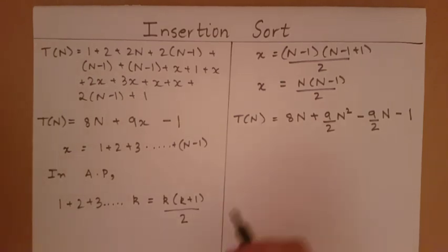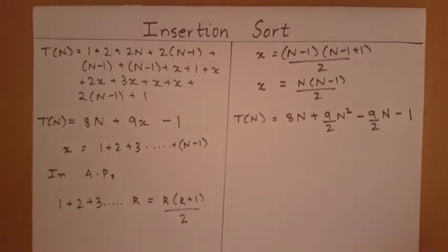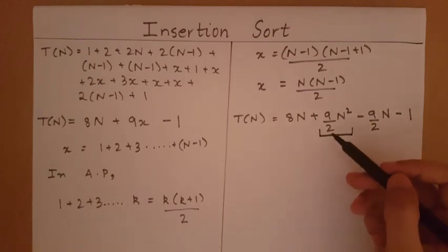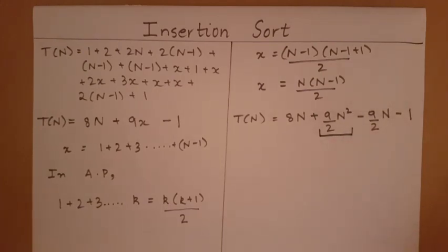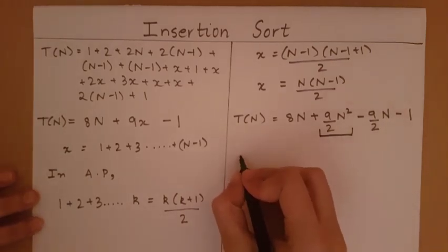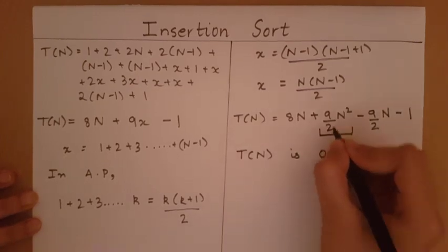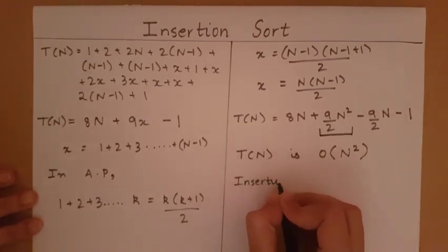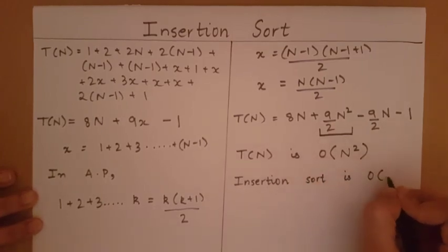Since constants change with different implementations, we use Big O notation to get an overall view of the growth of this function with respect to n. The dominant term is (9/2)n², which causes time to grow quadratically. Ignoring the constant, we say T(n) is O(n²). Therefore, insertion sort is O(n²) in its worst case.